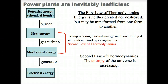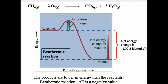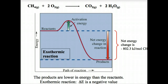The combustion of methane gas releases 50.1 kilojoules per gram of energy, or the equivalent of 802.3 kilojoules of energy per mole of methane. Although there is a thermodynamic drive for combustion that leads to a lower thermodynamic state, it does not begin without a spark. This spark is called the activation energy — the energy required to initiate the reaction. In an exothermic reaction, the energy of the products is less than the reactants, so energy is given off from the reaction in the form of heat.